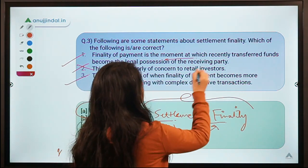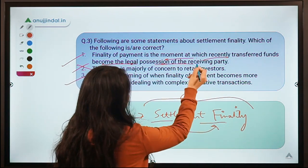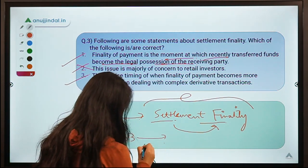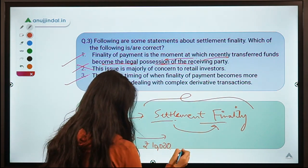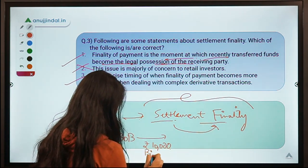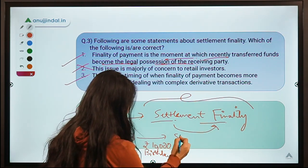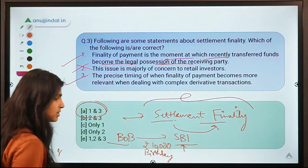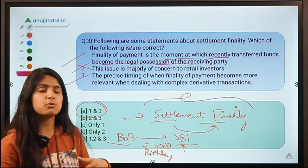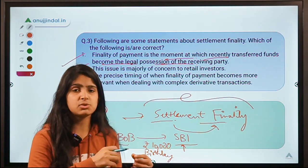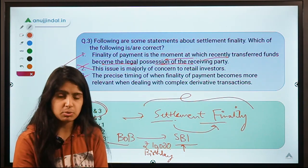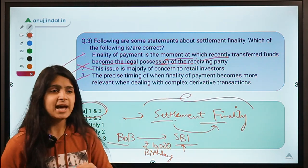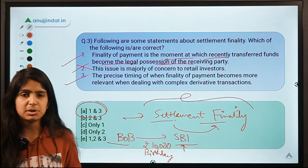Settlement finality is the moment at which recently transferred funds become the legal possession of the receiving party. For example, if I have an account at Bank of Baroda and send ₹10,000 to a friend at SBI via Google Pay, it takes some time. Sometimes the payment gets stuck in between — it hasn't reached its end and is in processing mode. You don't know whether the funds are with you or your friend.